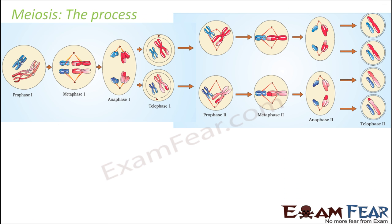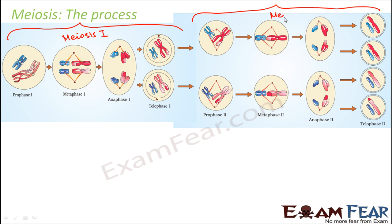Let us look at the overall process of meiosis. This entire part is meiosis 1, and this entire part is meiosis 2. Each meiosis in turn has four stages: prophase, metaphase, anaphase, and telophase. I will not go into very much detail here — if you want to learn it in detail you can refer to the lesson on cell cycle from class 11. However, I will give a quick review so that you are able to understand the next concepts in chromosomal inheritance.